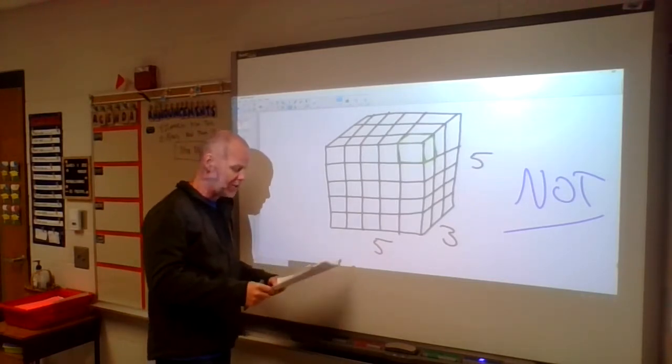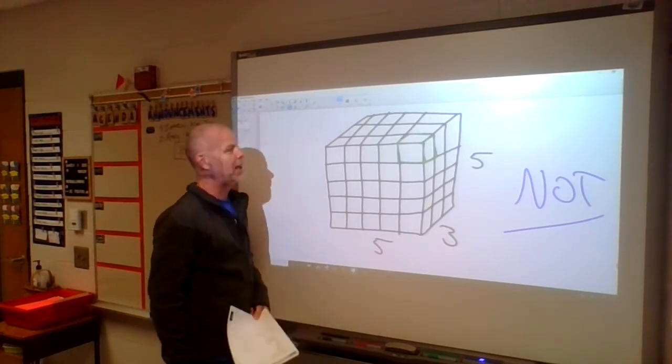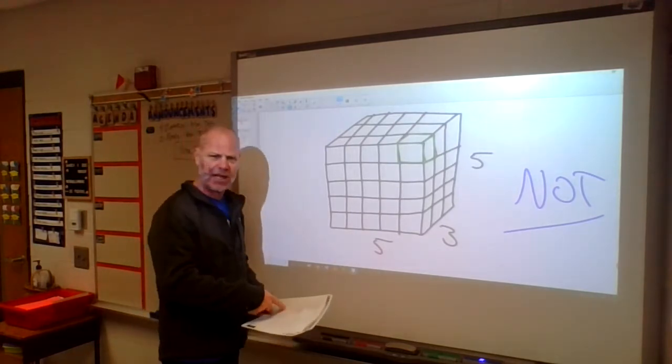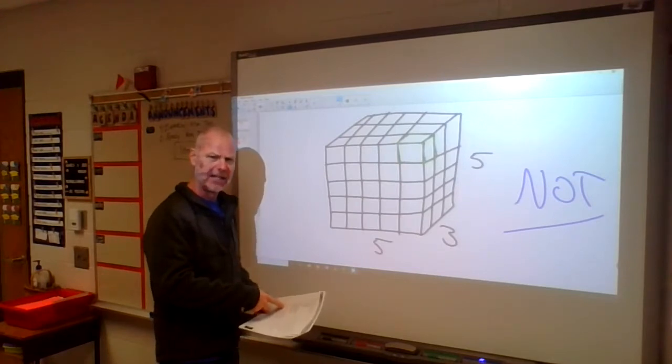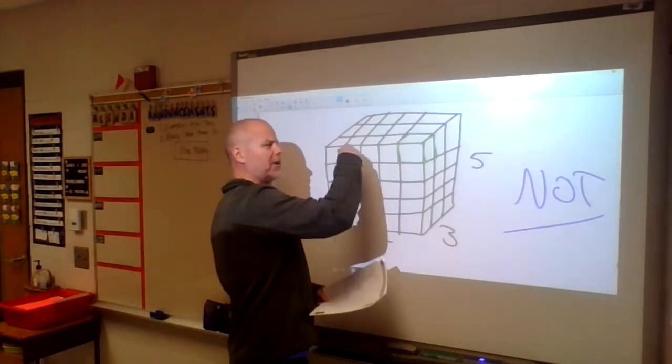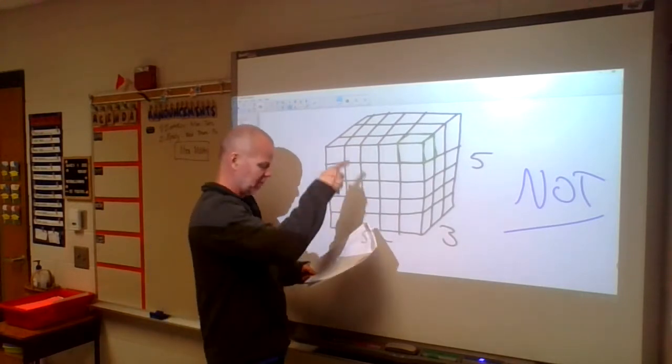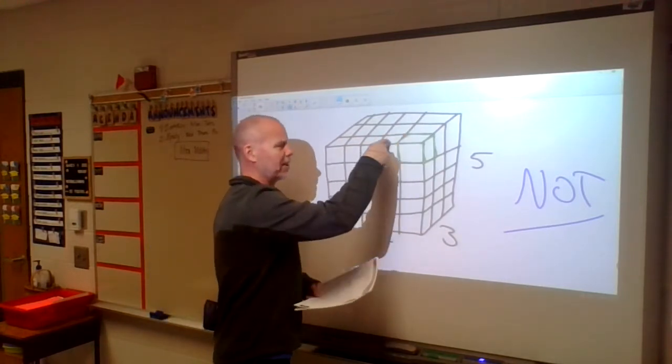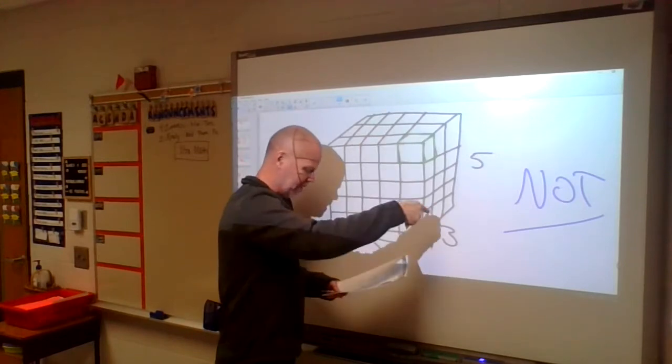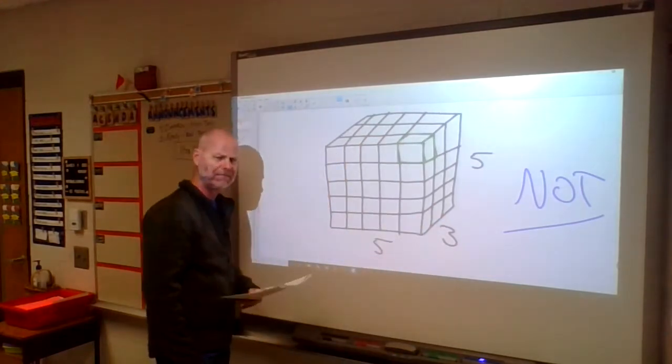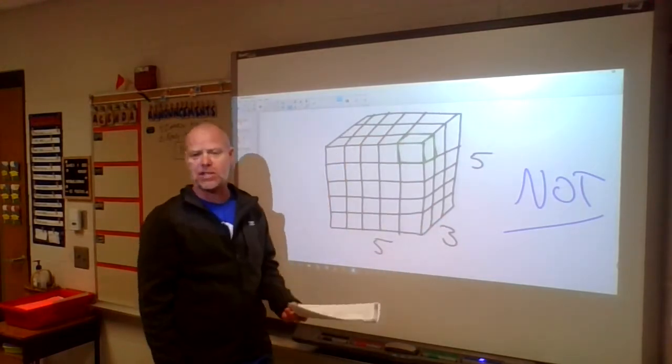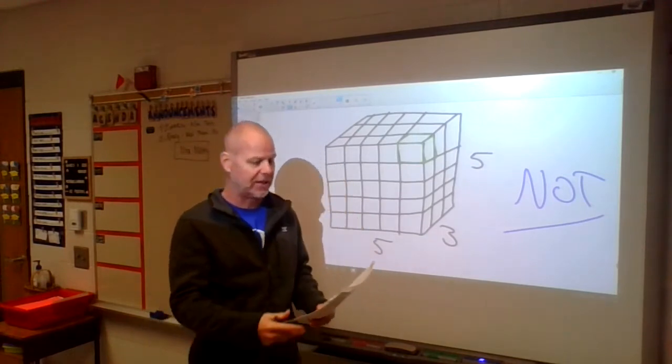Multiply the number of cubes in the top layer by the number of layers. Well, this is awful close to number A, right? Number A said the sum of the top layer and the height. This says multiply the number of cubes in the top layer, again, the number of cubes in the top layer by the number of layers. Yeah, you got to read those closely. Those are hard questions, right? Those are hard questions.